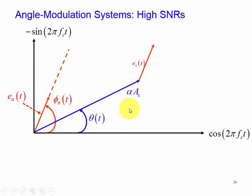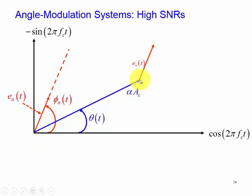Since we're treating this as a phasor, which acts like a rotating vector, we can add these two vectors by placing them tail to head and get the resultant from tail to head. You can see here we have the same direction and magnitude associated with e_n(t), translated from the tail to the head of alpha_ac. The resultant vector goes from the very beginning of alpha_ac all the way to the head of e_n(t). Now we're going to divide e_n(t) into two components.